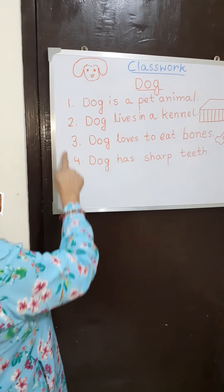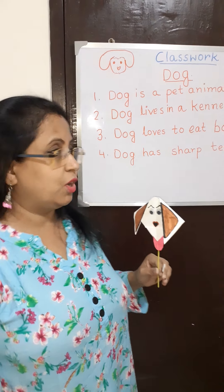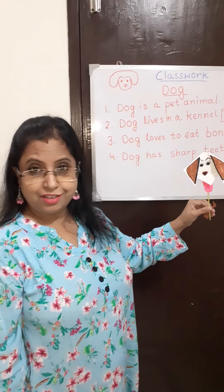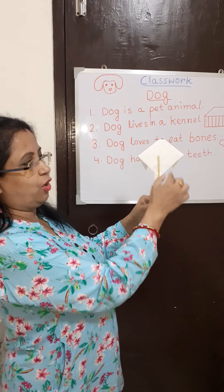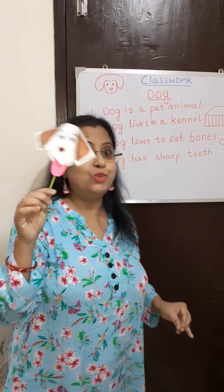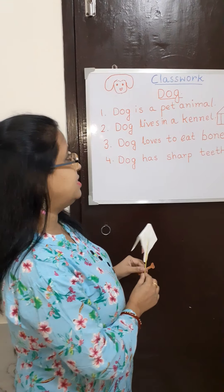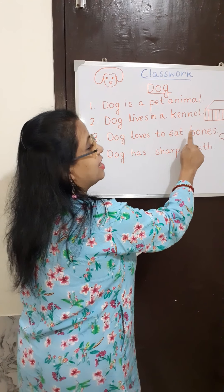So children, we have learnt four sentences on dog. Now, what is your work? Your work first is to make this dog as your craft work, and then just put a stick on its back so that you can play with it. You first make a dog, take help of your parents, and learn these sentences.